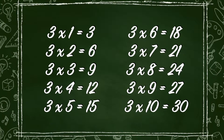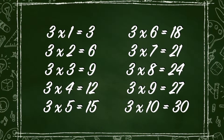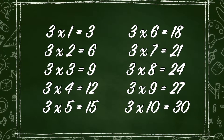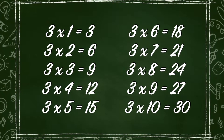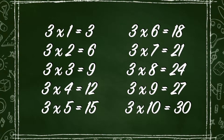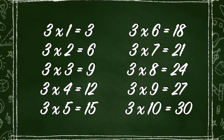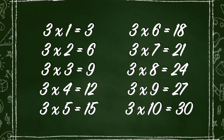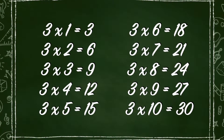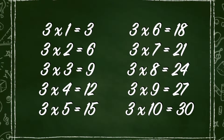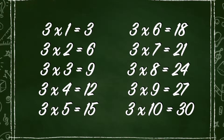3 6s are 18. 3 7s are 21. 3 8s are 24. 3 9s are 27. 3 10s are 30.